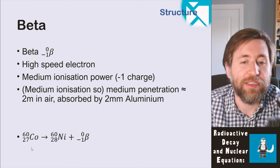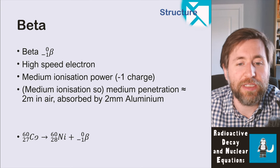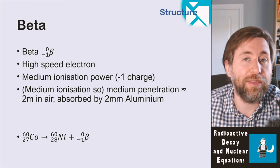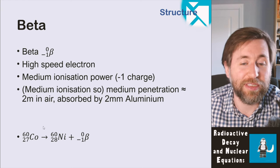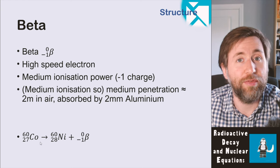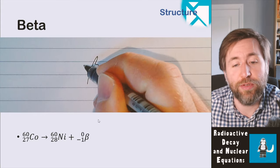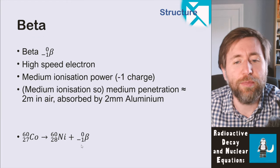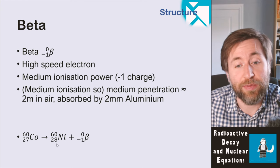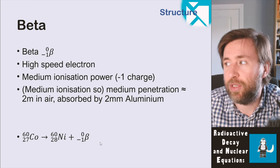Here's the beta decay equation: cobalt-60 decaying into nickel-60. One of those neutrons is turning into a proton. The mass number 60 hasn't changed on either side — 60 protons plus neutrons in the cobalt, and 60 in the nickel — but we have one more proton in the nickel and one fewer neutron. Notice the beta notation: zero mass and minus-one proton number, which indicates the charge on the particle. All you need to do is make the top line and bottom line balance. 60 equals 60 plus zero; 27 equals 28 minus one.